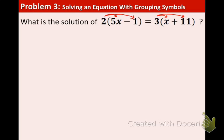And we are multiplying 2 times 5x is 10x. 2 times negative 1 is negative 2. 3 times x is 3x and 3 times 11 is 33.